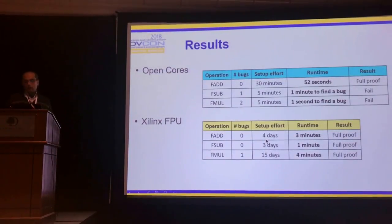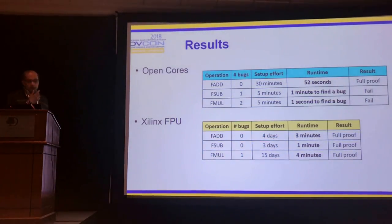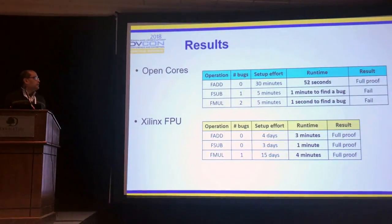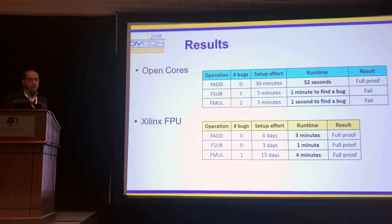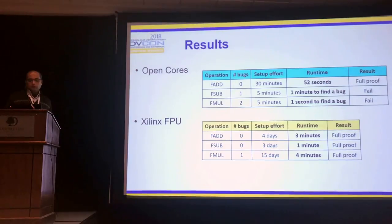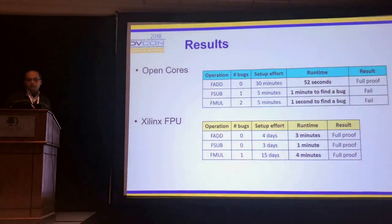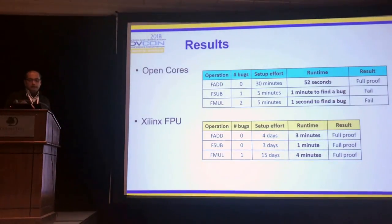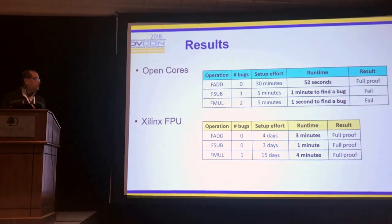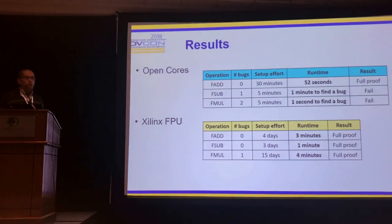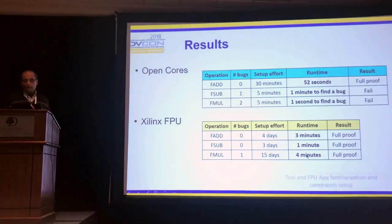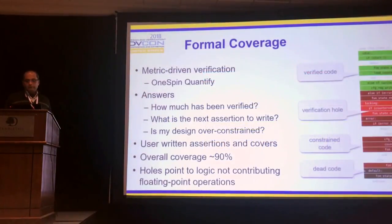On the results: multiplication took about 15 days to set up, mostly due to setting the constraints and handling the configurability. We have thousands of possible configurations to set correctly. Once we had that right, we were able to do a full proof. Our operations were multiplication, addition, and subtraction — we don't do division. We were able to prove all our operations. The previous speaker mentioned an open core they tested, and those results were also shown. Coverage was discussed as the next topic.